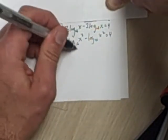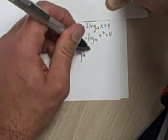Still condensing that since that's subtraction. I can rewrite this as a division, x cubed over x squared, equals 4.